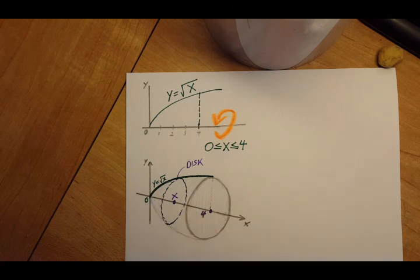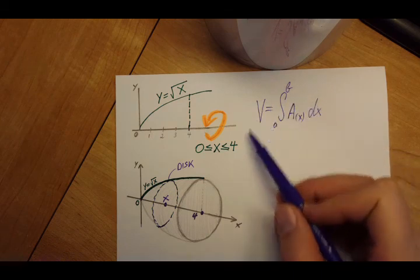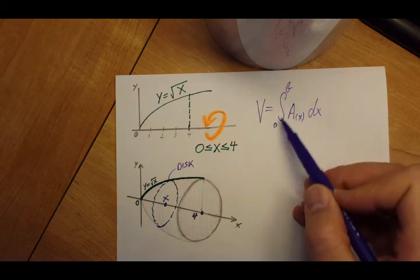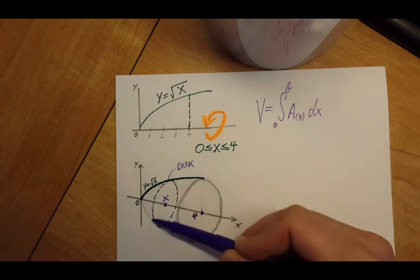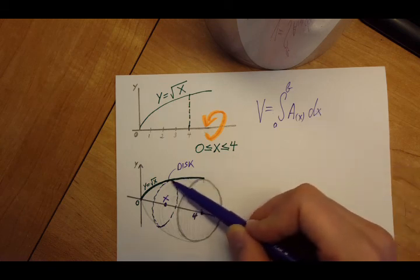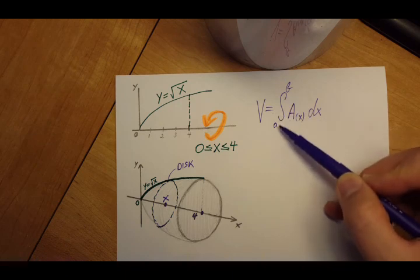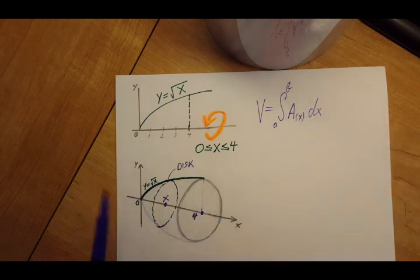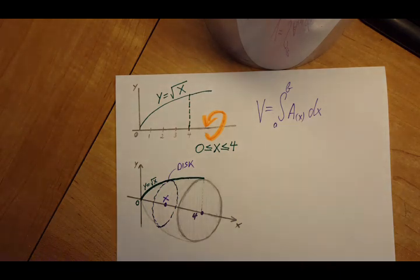This is the integral setup that I'm gonna rely on. Volume equals the integral of the cross-sectional area times its thickness, which is infinitesimally small, and the limits a to b. For us, a is gonna be 0 and we're gonna go all the way till 4, which is our upper limit.